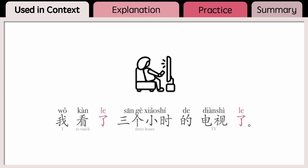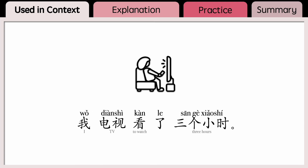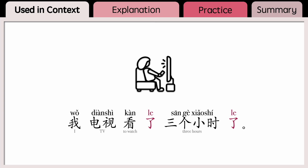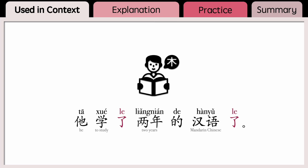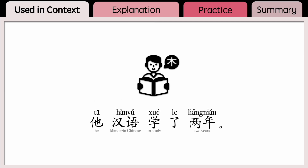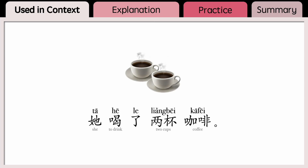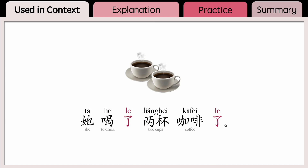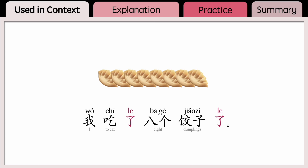Examples: 我看了三个小时的电视了。 我电视看了三个小时。 我电视看了三个小时了。 他学了两年的汉语。 他学了两年的汉语了。 她汉语学了两年。 她汉语学了两年了。 她喝了两杯咖啡。 她喝了两杯咖啡了。 我吃了八个饺子。 我吃了八个饺子了。